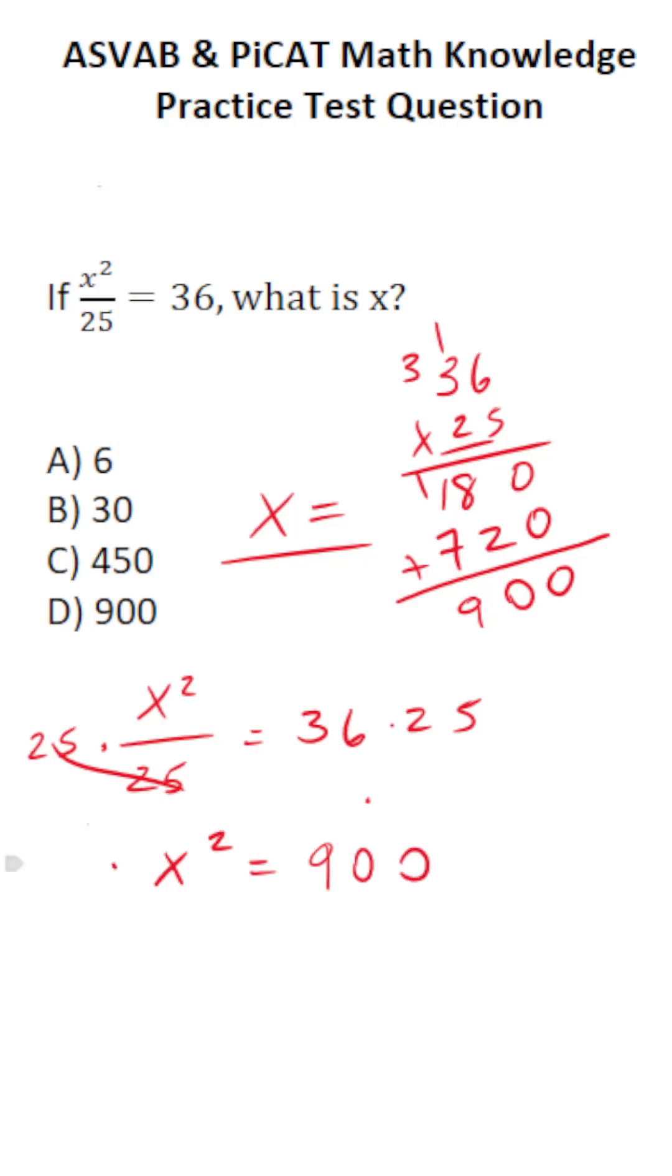To get x by itself, we're going to take the square root of both sides. This crosses out, leaving you with x. What is the square root of 900? Well, you should know that the square root of 9 is 3. So all we're going to have to do is tack on an extra 0. So the square root of 900 is 30. So this one is going to be B, x is 30.